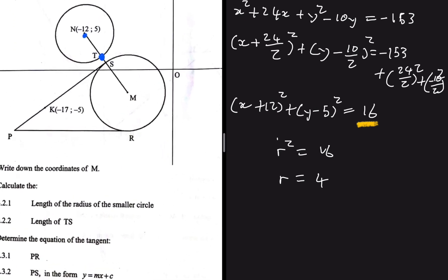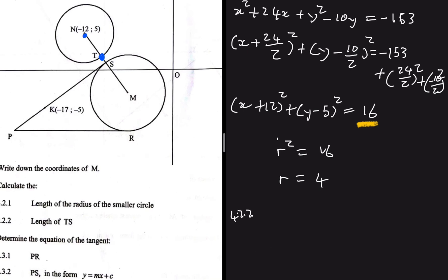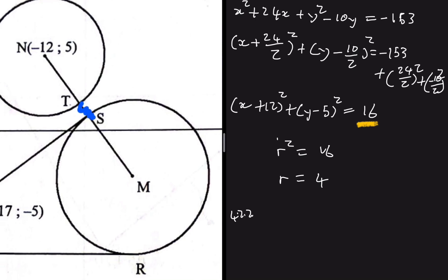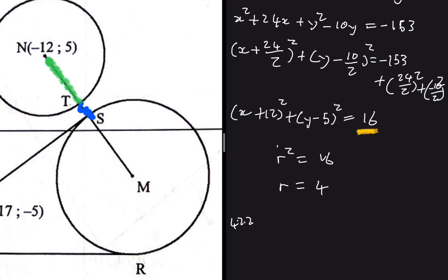For question 4.2.2, we need the length of TS. TS is the distance between the two circles. To find it, we first find the distance MN between the two centers, then subtract the radius of the smaller circle and the radius of the bigger circle.